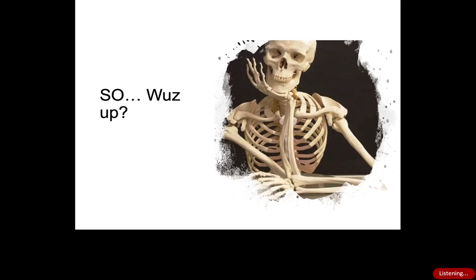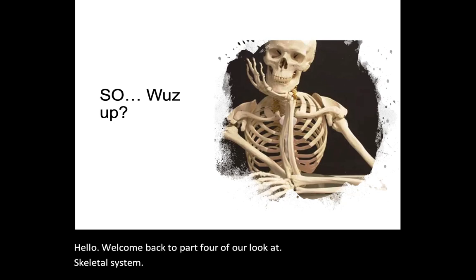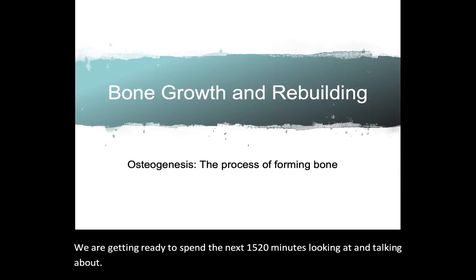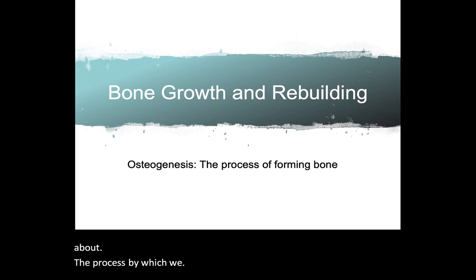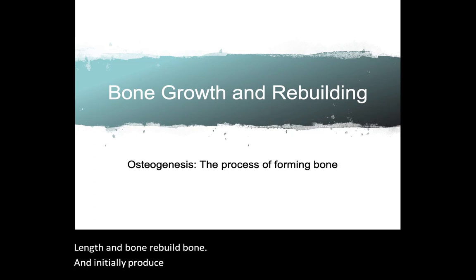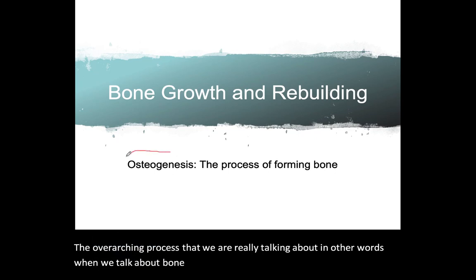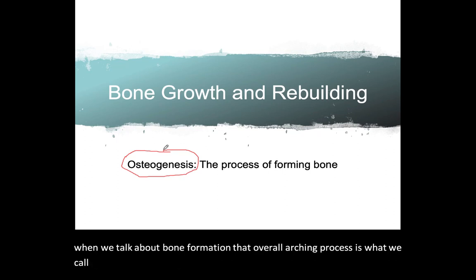Hello and welcome back to part four of our look at the skeletal system. We are getting ready to spend the next 15-20 minutes looking at and talking about the process by which we lengthen bone, rebuild bone, and initially produce bone during fetal development. The overarching process — when we talk about bone formation — is what we call osteogenesis, which is the production or the process of producing bone.